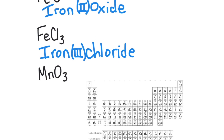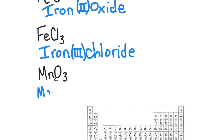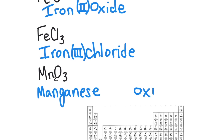Now let's try Mn₂O₃. I'll write the name of the cation — manganese — and the anion — oxide. To find the charge on manganese: oxygen is in Group 6, so it has a −2 charge, and there are three oxygens, giving −6 total. There are two manganese atoms, so each must have a +3 charge (2 × 3 = +6) to balance. The name is manganese(III) oxide.